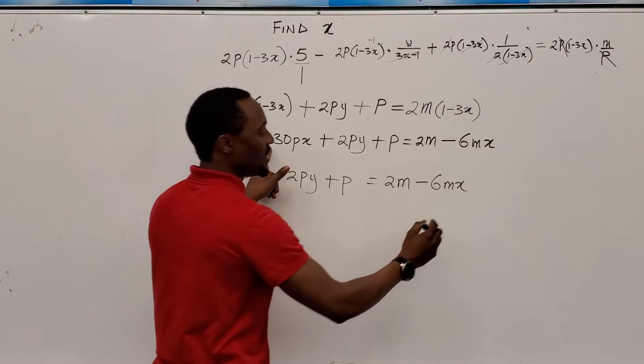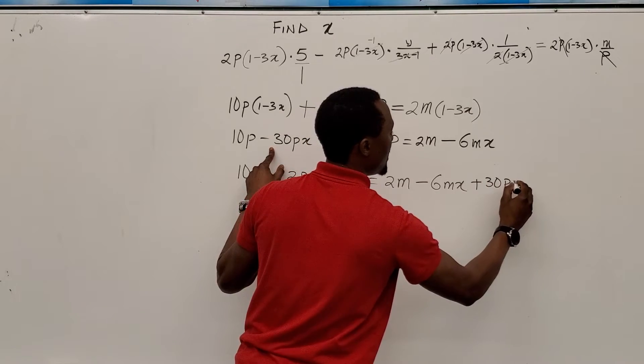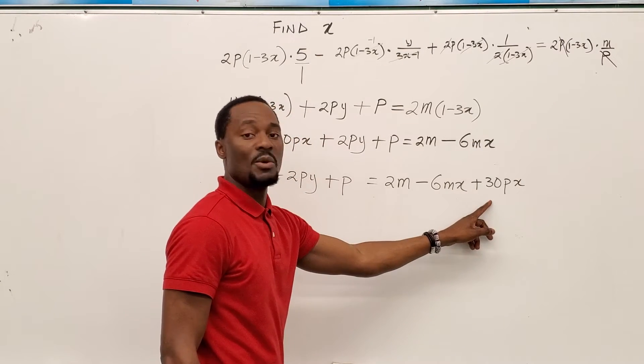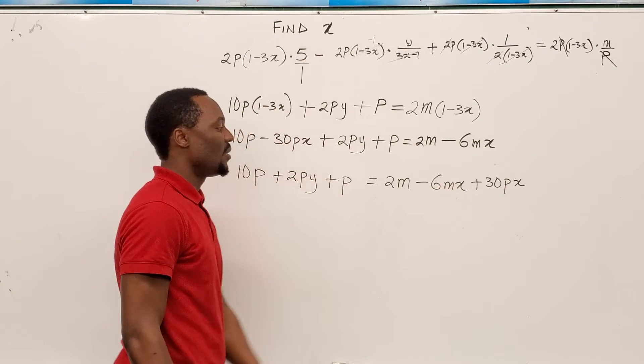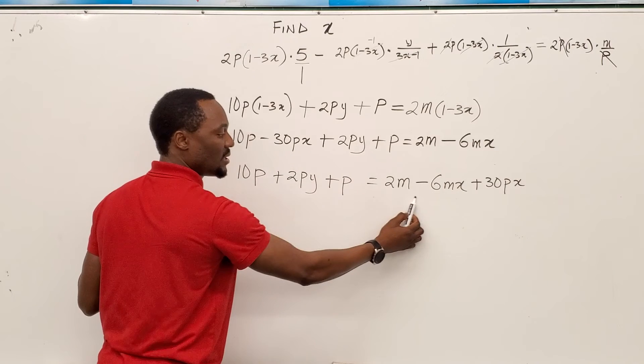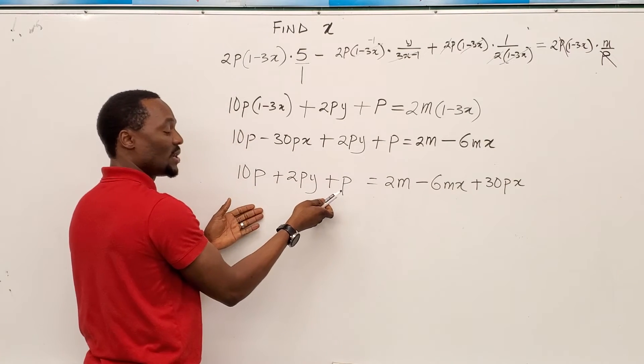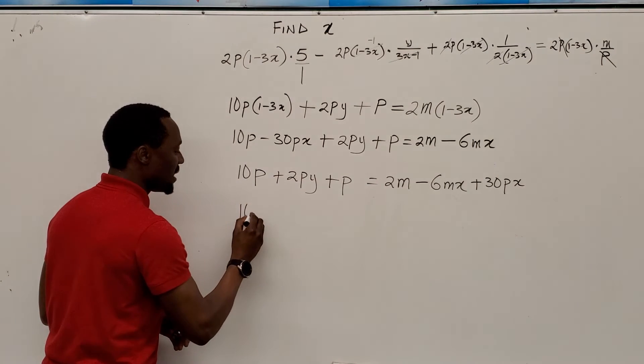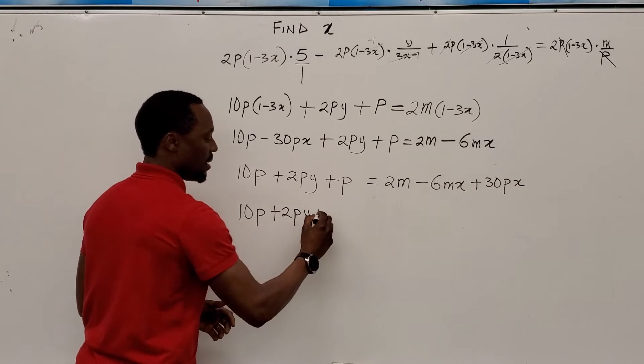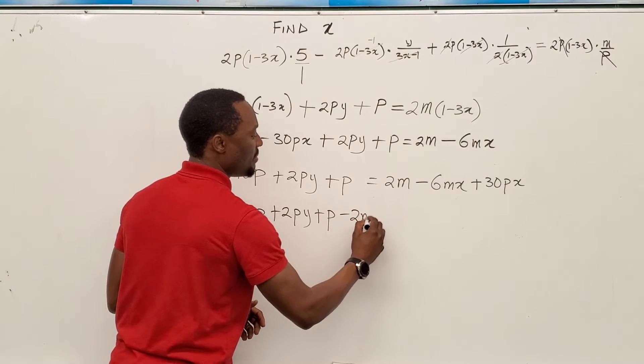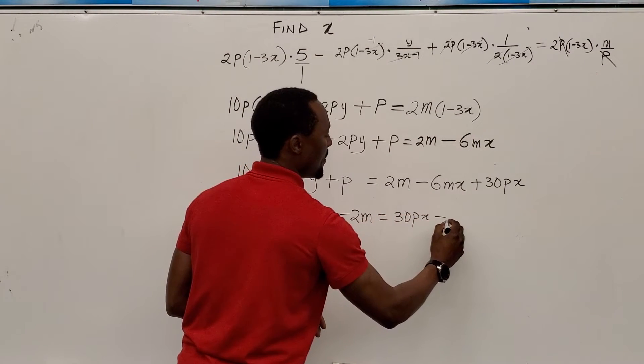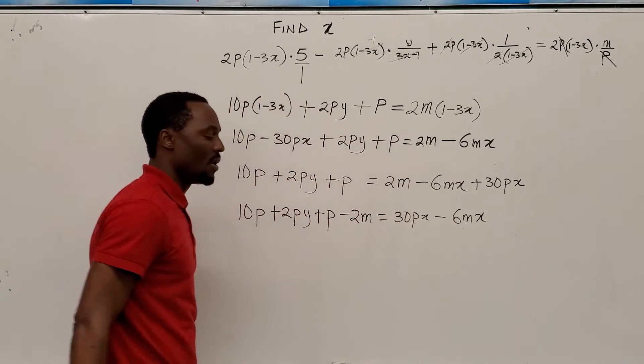Then this is added to it plus 30px. Now I can take this away and rearrange this so the positive term of x stays on this side. Looks more beautiful like that. So when this is subtracted from both sides, it will disappear from here or zeroes out from this side and it shows up here as a negative 2m. So it's going to be 10p plus 2py plus p minus 2m equals 30px minus 6mx. We're almost done.